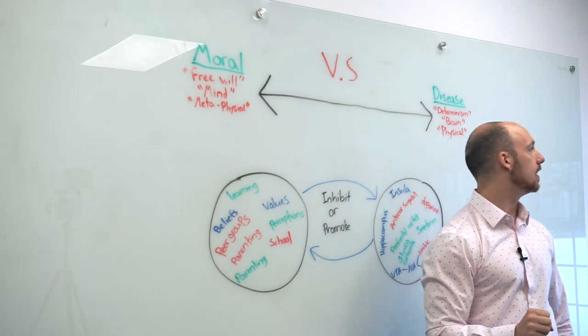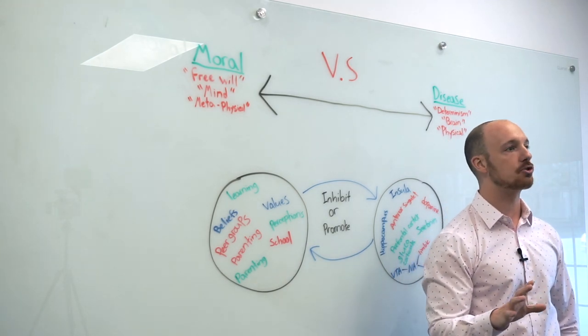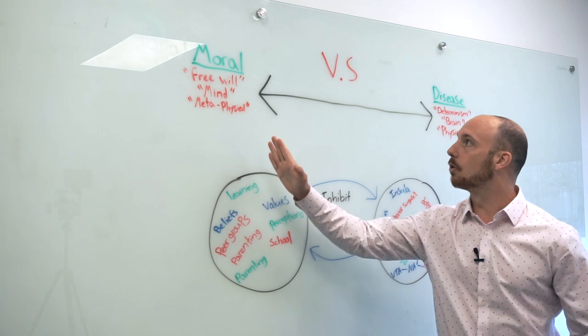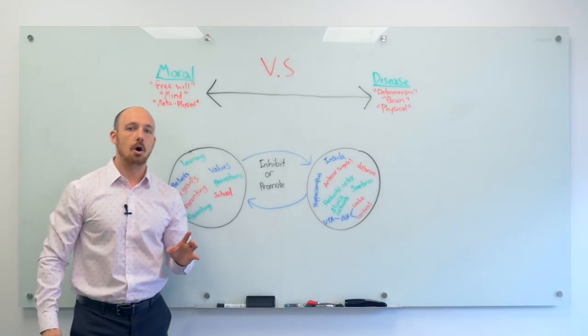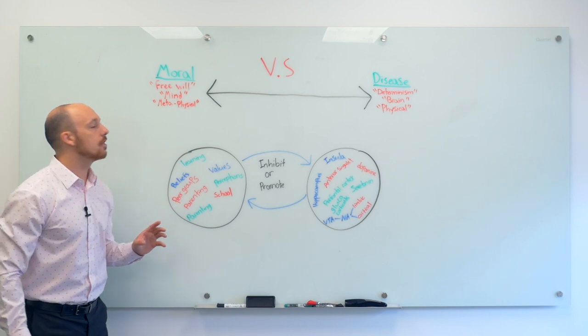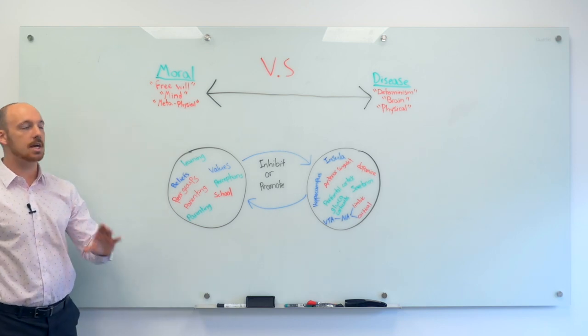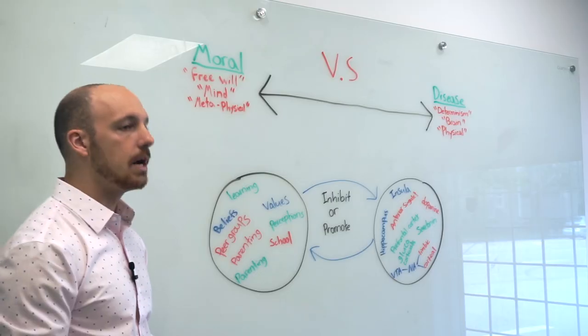I don't believe that this is an accurate enough way to describe what's going on here. We got the moral model and we got the disease model. The moral model is based on the presupposition that we have free will.